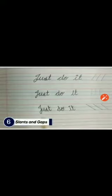Number six, slants and gaps. See the slanting lines and the straight lines. Slanting lines means there should be a little slant when you are forming letters and there should be a proper gap in between two words.